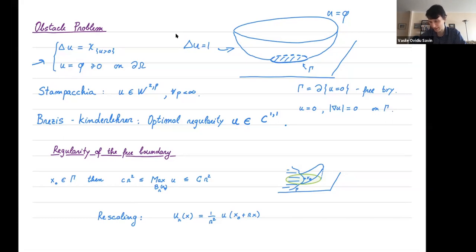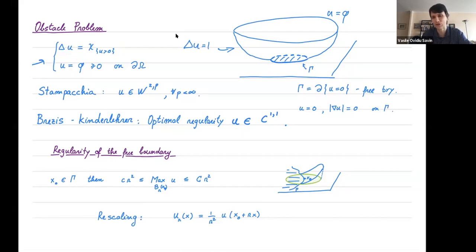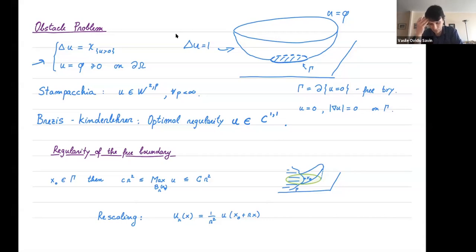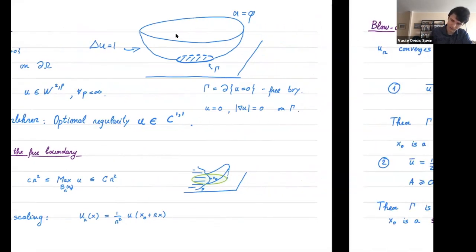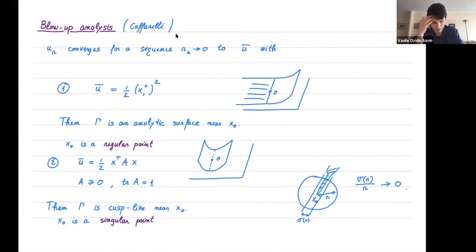The techniques here are similar to those in minimal surface theory: one does a blow-up analysis. If you pick a point x0 on the free boundary, the function u separates quadratically from such a free boundary point as you go into the positivity set. There is a natural quadratic scaling in this problem that leaves the problem invariant, and because of the quadratic growth away from the free boundary, when you perform the quadratic blow-up you end up with a global solution. This blow-up analysis was done by Caffarelli.